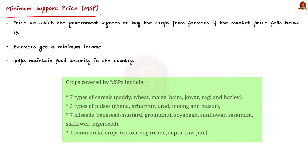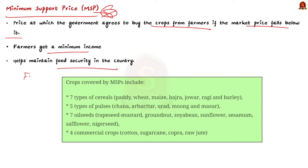Our next topic is minimum support price (MSP). MSP is the price at which the government agrees to buy the crop from farmers if the market price falls below it, ensuring farmers get a minimum income and helping maintain food security. For example, if the MSP for wheat is set at ₹2000 per quintal and the market price falls below that, the government will buy the wheat at that price. Currently, MSP has been granted for 22 crops and a fair and remunerative price for sugarcane. The mandated crops include 14 Kharif season crops, 6 Rabi crops, and 2 commercial crops.